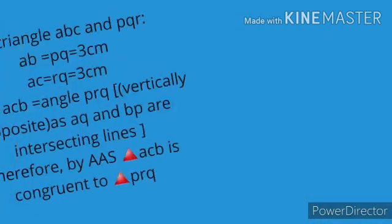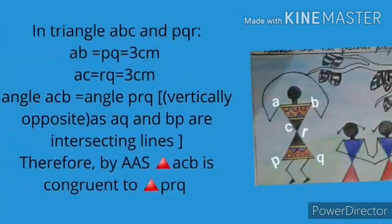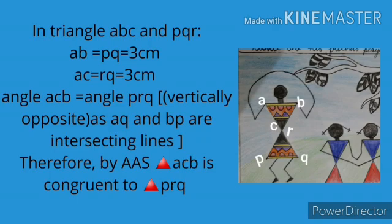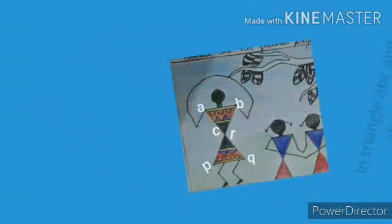In triangle ABC and PQR, AB and PQ are 3 cm, AC and RQ are 3 cm. Angle ACB is equal to angle PRQ as a vertically opposite angle. Therefore, by AAS, triangle ACB is congruent to triangle PRQ.